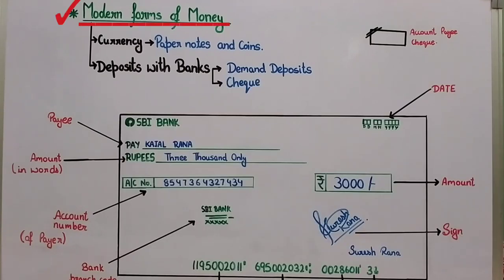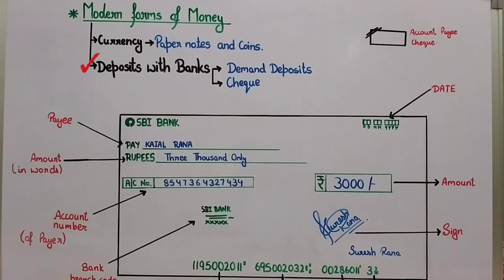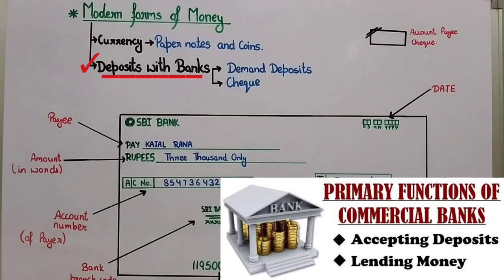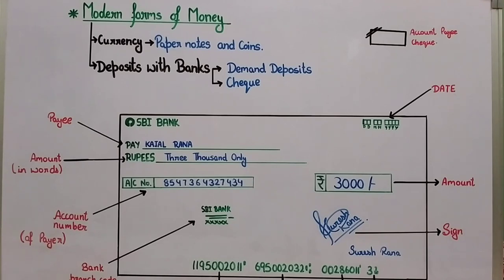Today we will continue on the topic of modern forms of money. Currency — which was our sub-topic — we have already studied, covering paper notes and coins. Now the second sub-topic is deposits with banks, where we will study demand deposits and cheques in detail. Banks have two main functions: one is to accept deposits, and the other is to provide loans.